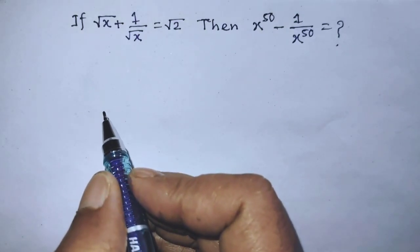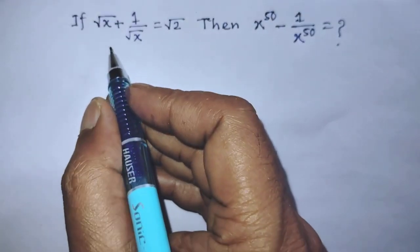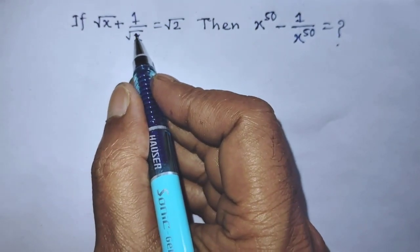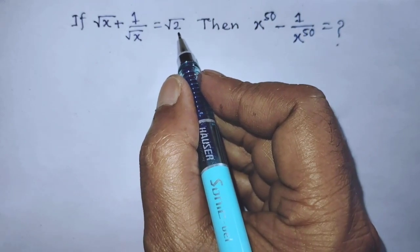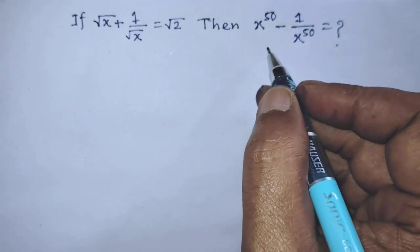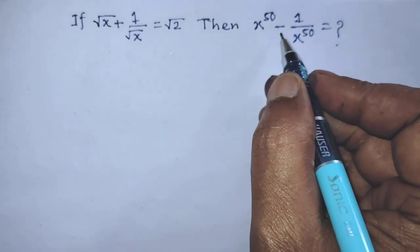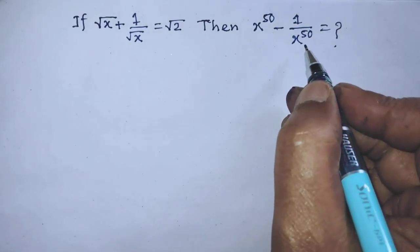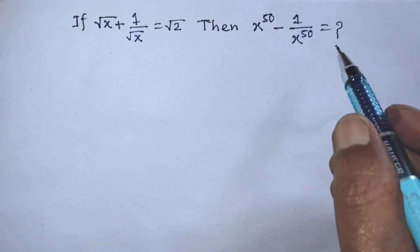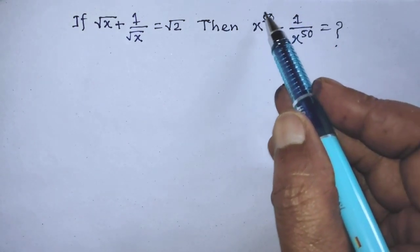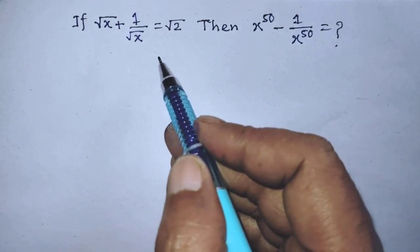Hello guys, you are welcome to solve this math problem: if square root of x plus 1 over square root of x is equal to square root of 2, then find the value of x to the power 50 minus 1 over x to the power 50. Today I am telling you how to find the value of this algebraic expression from this equation.